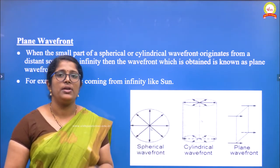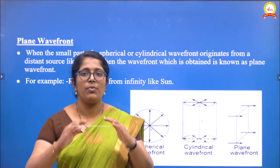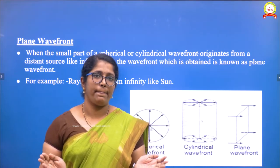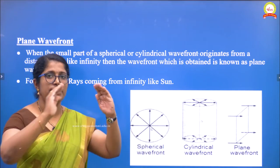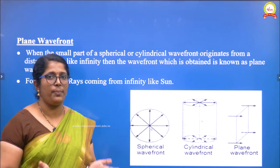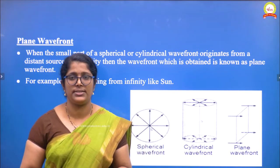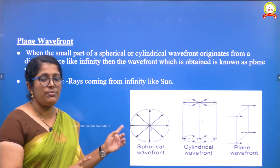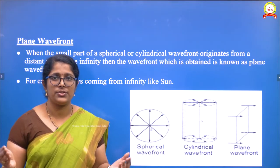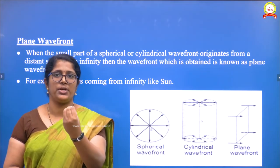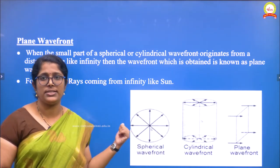Spherical wavefront: suppose you have a point source — a small bulb kept at a point. It will generate waves in all directions. If you consider the locus of all points — that is the wavefront — vibrating in the same phase, for a point source that locus will be just like spheres. So a point source, such as a candle or something, emits a wavefront in the form of spheres. That is called a spherical wavefront.